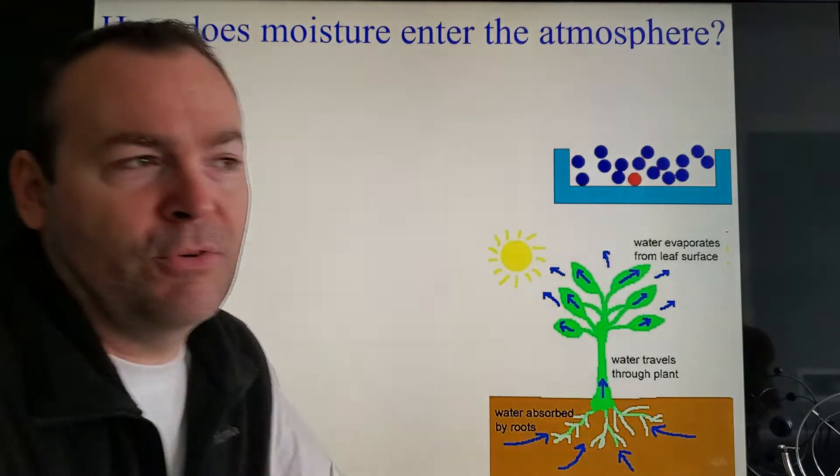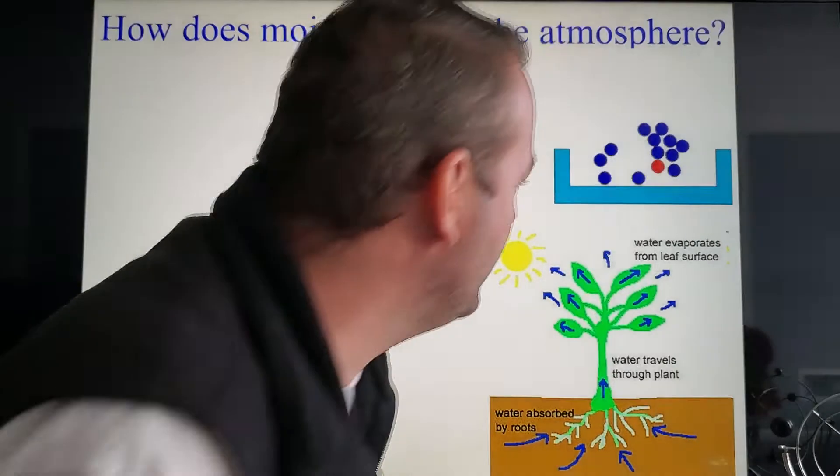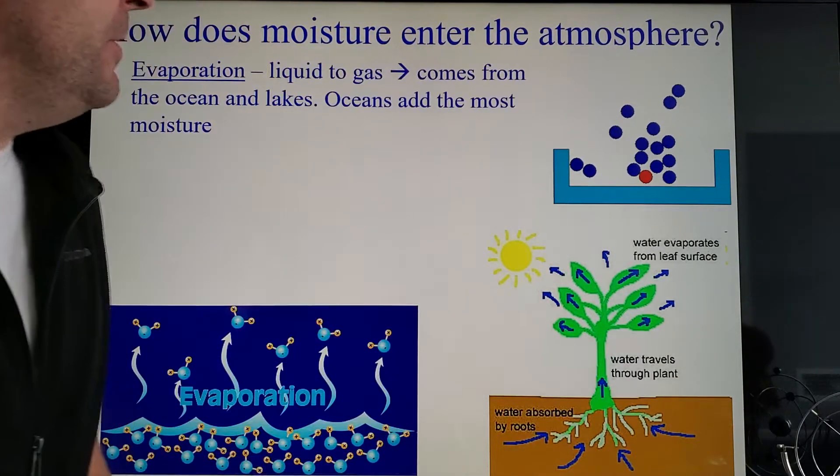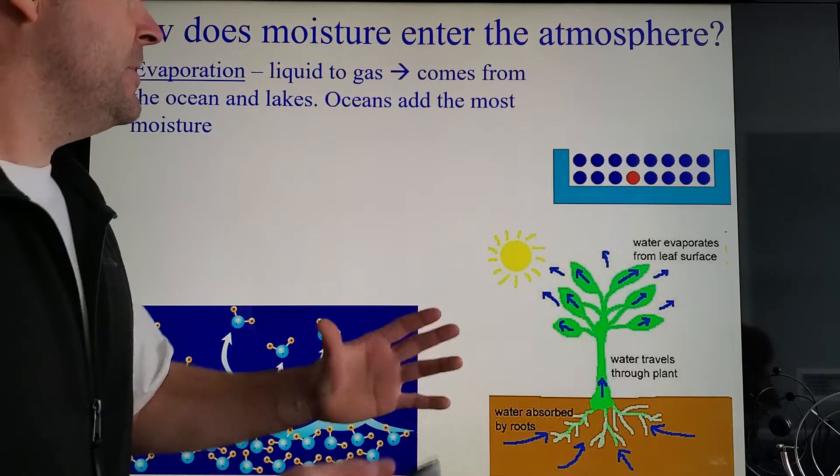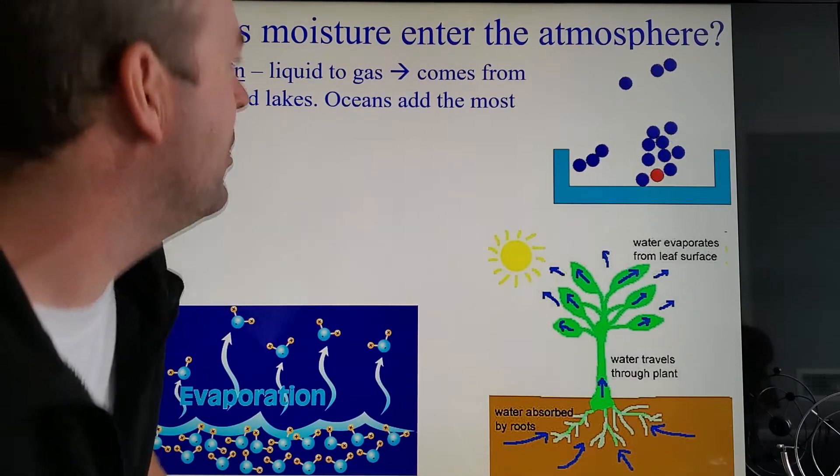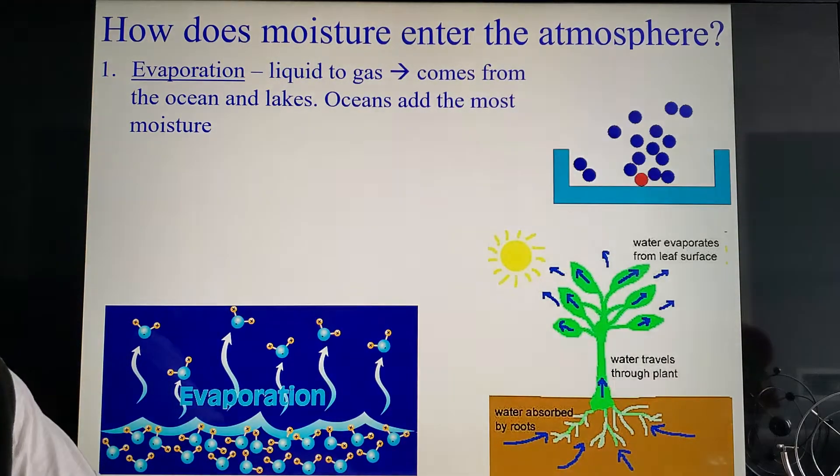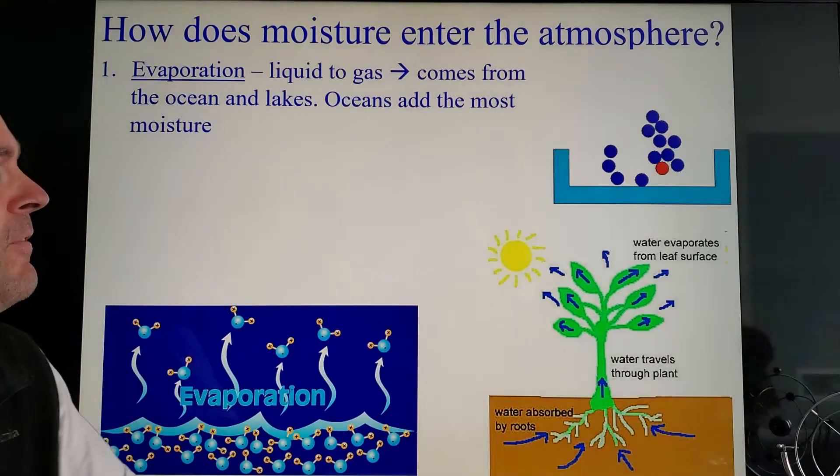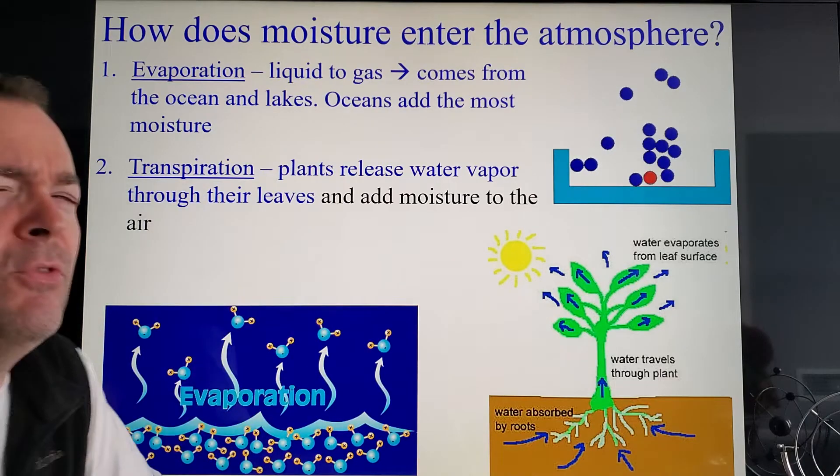Well, how does moisture get into the atmosphere? I'm sure you're familiar with the main term evaporation, but there's another term maybe you're not so familiar with. Get that down, evaporation, of course liquid going to gas. Most of it coming of course from the oceans and lakes, right? We're called the blue planet because we're mostly covered by water.